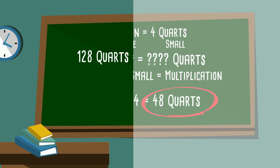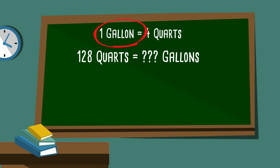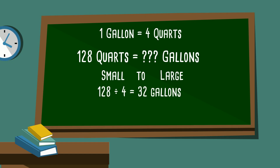How about this one: 128 quarts equals how many gallons? The hint: one gallon equals four quarts. Quarts is smaller than gallons, so we're going from small to large, so we will divide. So 128 divided by four, because there are four quarts in a gallon, and that gives us 32 gallons.